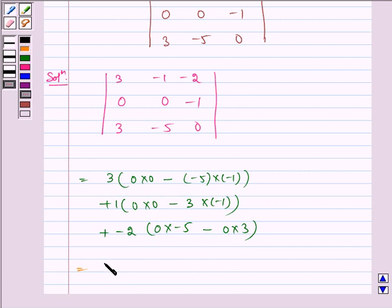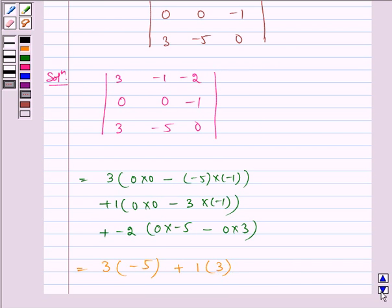Which is equal to 3 multiplied by minus 5, plus 1 into 3, plus 0. Which is equal to minus 15 plus 3, which is equal to minus 12.